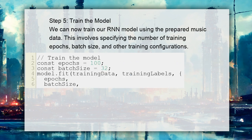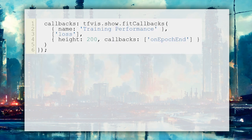Step 5: Train the model. We can now train our RNN model using the prepared music data. This involves specifying the number of training epochs, batch size, and other training configurations. And here is the rest of the code.